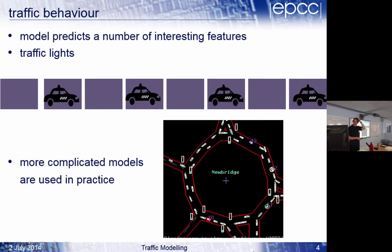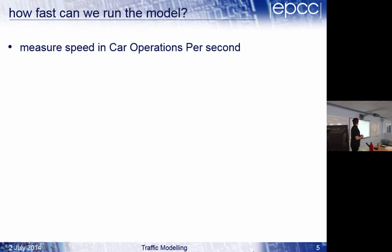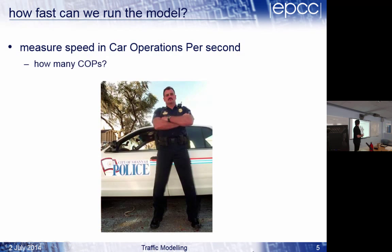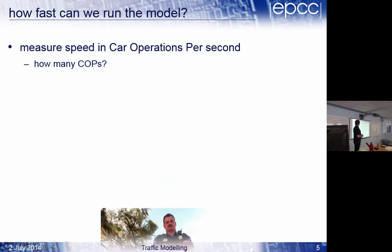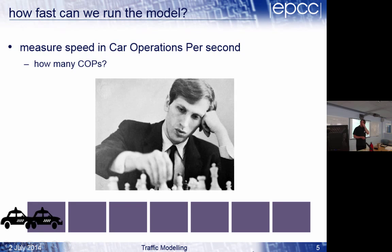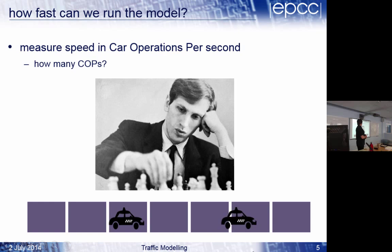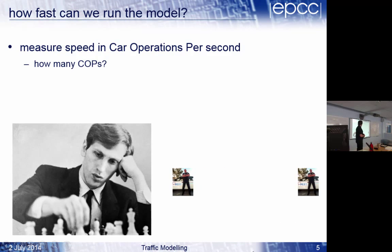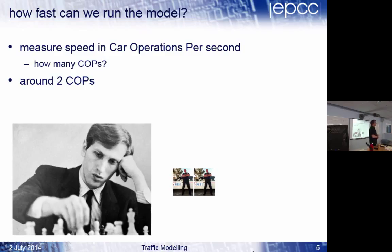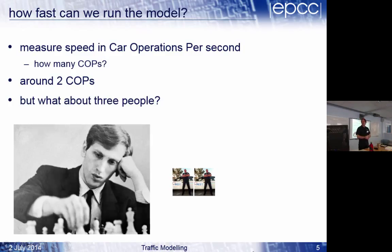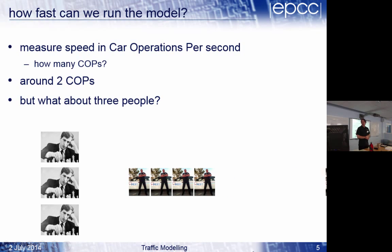So we're going to get somebody to do the pawns. We're going to measure the speed in car operations per second, which conveniently stands for COPS. That was supposed to be the humor. So we're going to get Bobby Fischer, who unfortunately has died since this lecture was written, who was a slightly bonkers chess champion in the 70s, to do it. I reckon he could hop them along. I reckon he could update this model at about two car operations per second. That's not particularly interesting. The question is, if we had three Bobby Fishers, could they do the model at six car operations per second? Can we parallelize the model to do the calculation quicker?